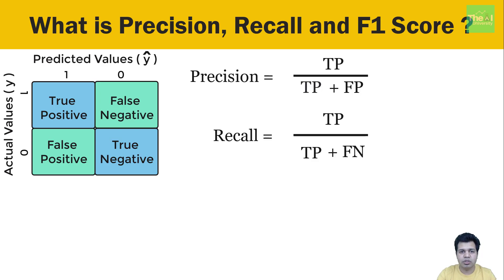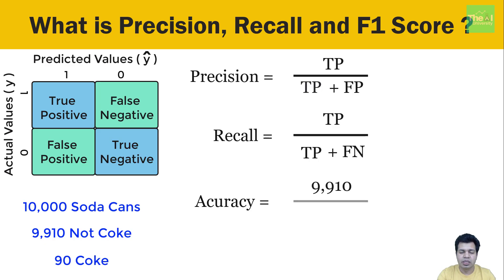So the ultimate question comes: how are these two metrics useful? Well, let's revisit our confusion matrix once again, and this time with respect to the soda classification problem. Let's say we want to build a machine learning model that classifies a soda as coke and not coke. Suppose we have 10,000 soda cans, and out of those 10,000 cans, 9,910 cans are not coke and the remaining 90 samples are coke. If we calculate the accuracy of being a soda not coke, then it will come as 9,910 divided by 10,000 multiplied by 100 equals 99.1%.